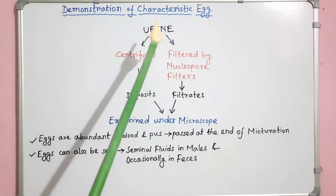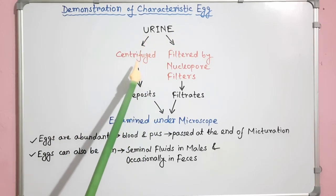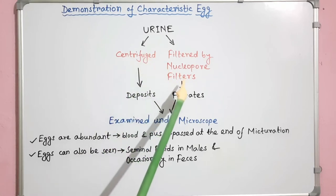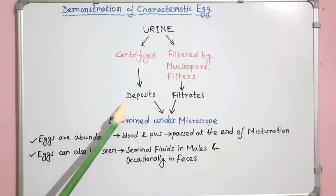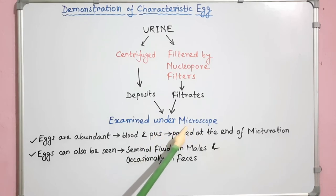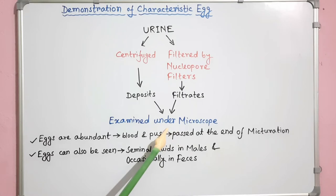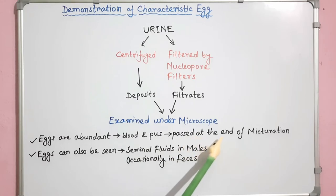Demonstration of Characteristic Egg: In this method, urine is either centrifuged or filtered using nucleopore filters. Then the deposits or filtrates are examined under a microscope to demonstrate the eggs with characteristic terminal spines. Eggs are more abundant in the blood and pus passed by patients at the end of micturition.